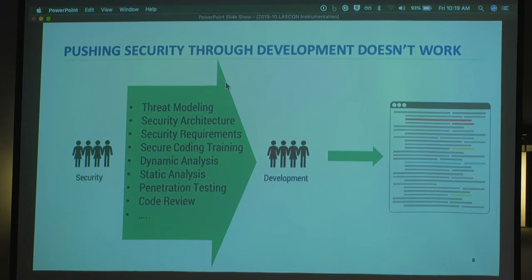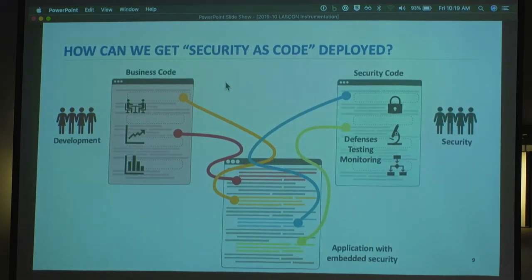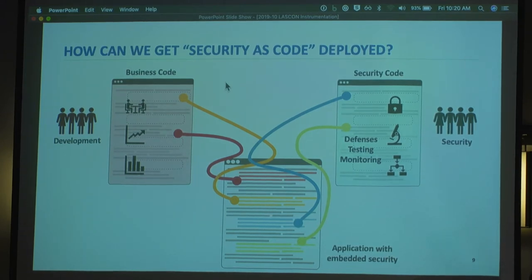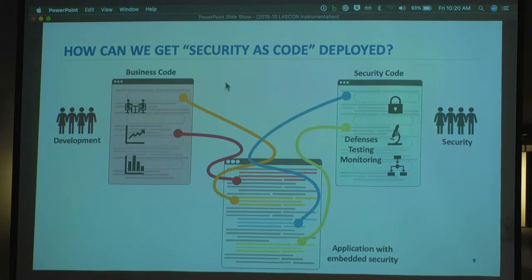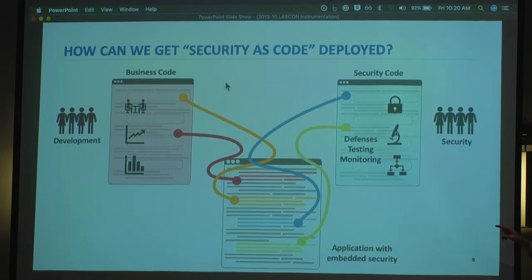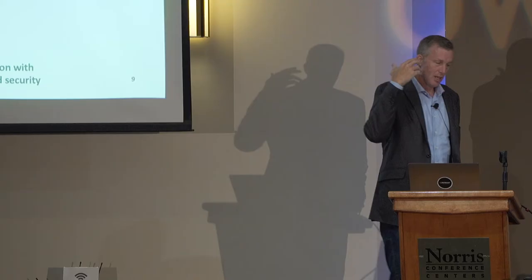There's a lot of talk in the DevSecOps community about security as code — the idea that we take the things we do in AppSec and turn them into code so we can run them as part of our pipeline or as part of the application. There's business code working on functions and features, and then there's security code — defenses, testing code, and monitoring in production. We're trying to push that security code through development, and it hasn't been very effective. What if there was a different path for getting that security code into our apps without going through development?